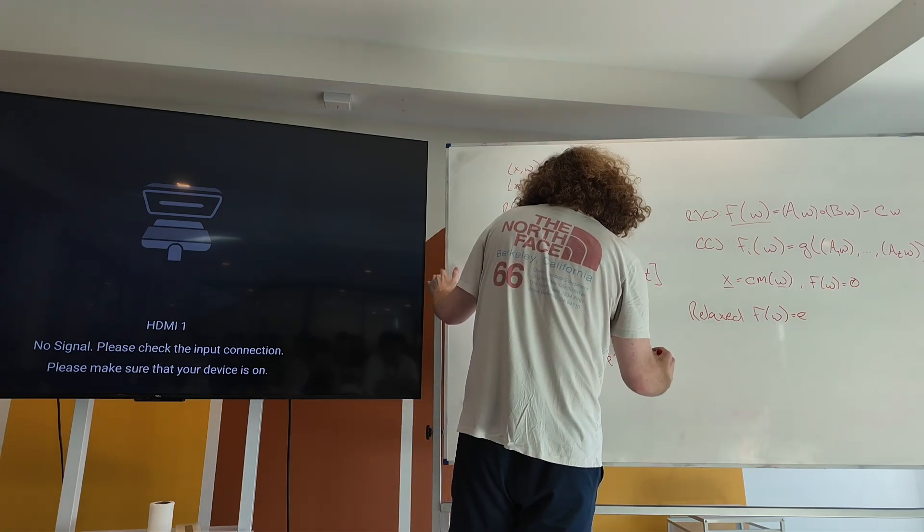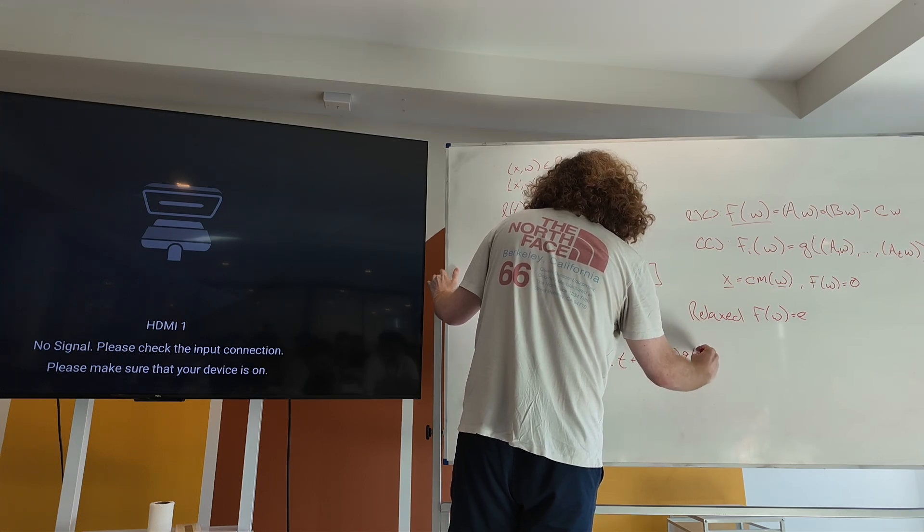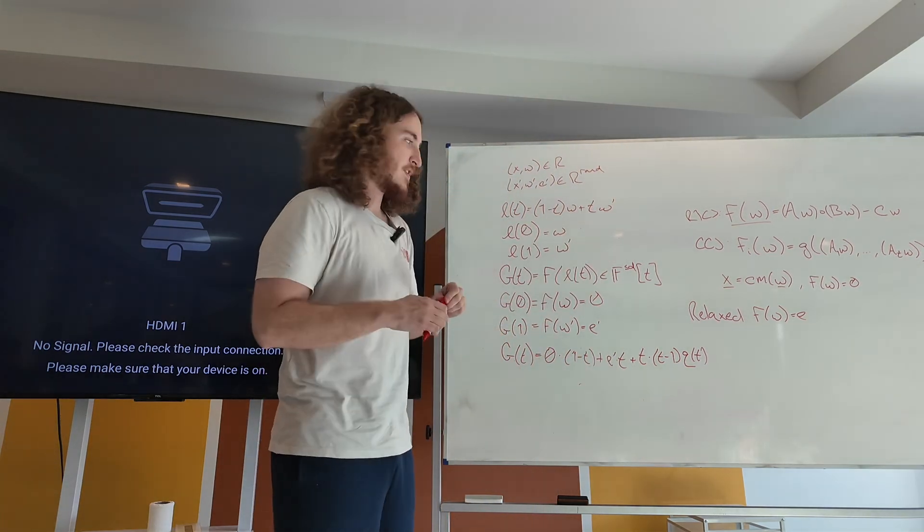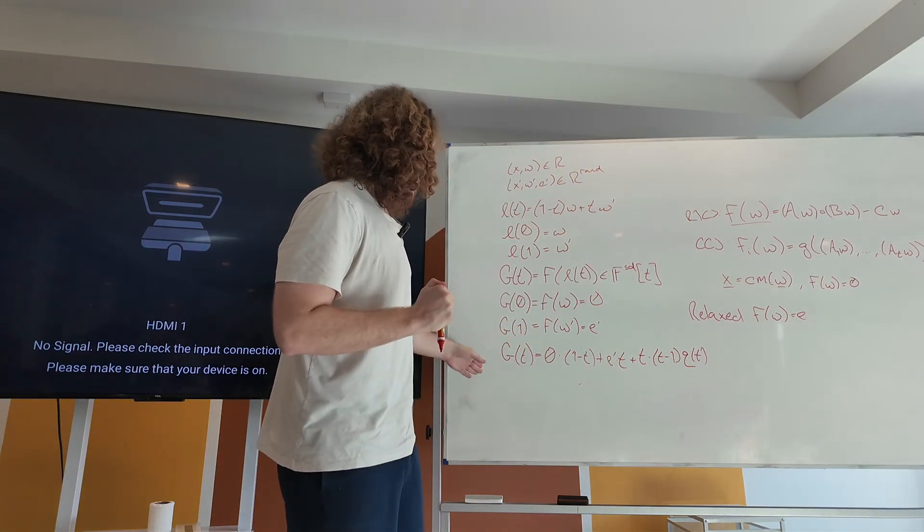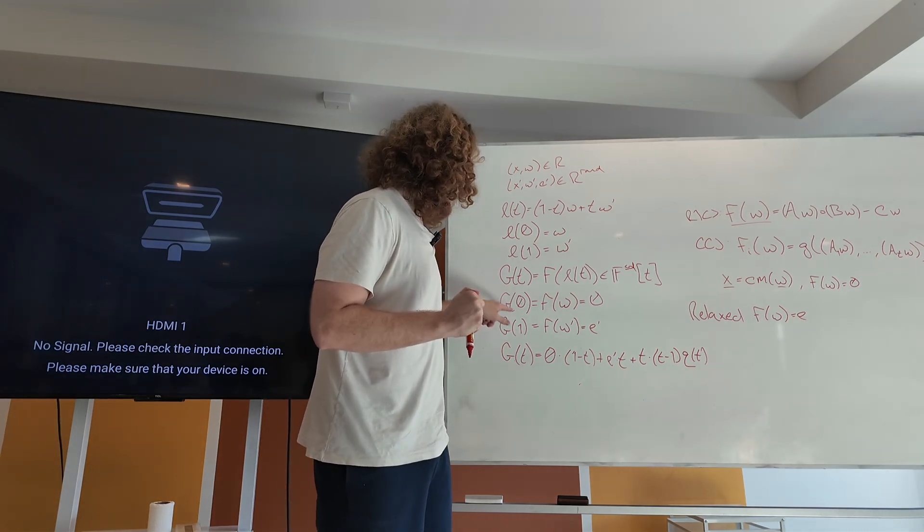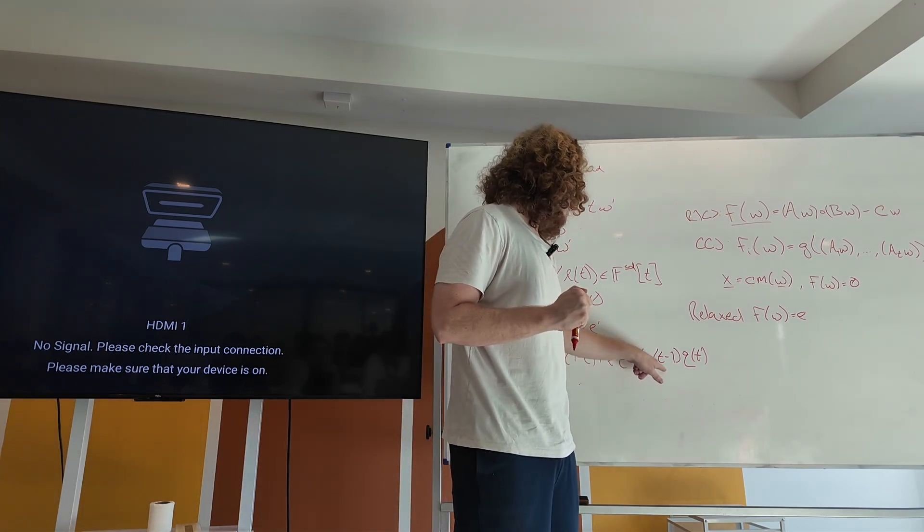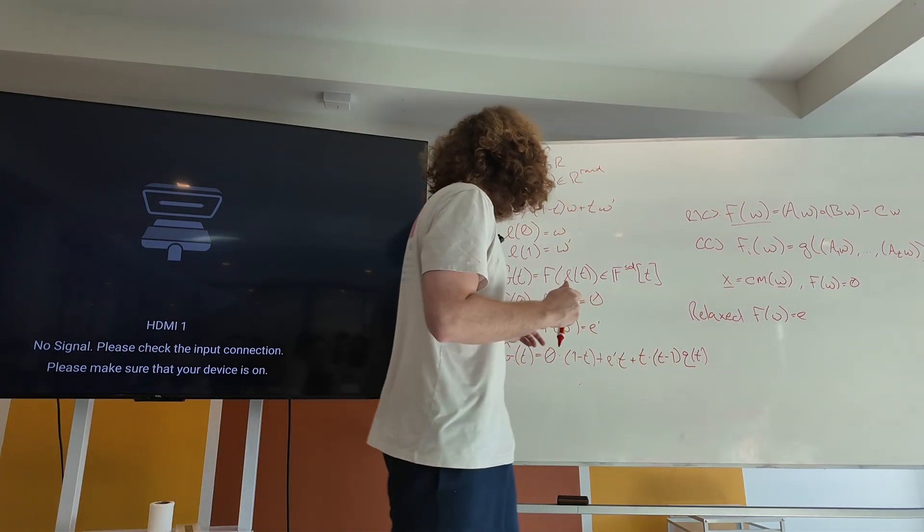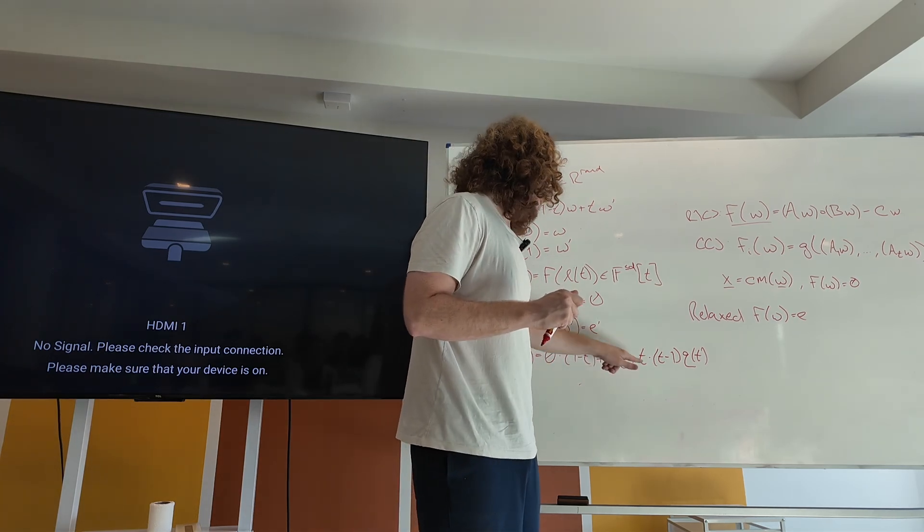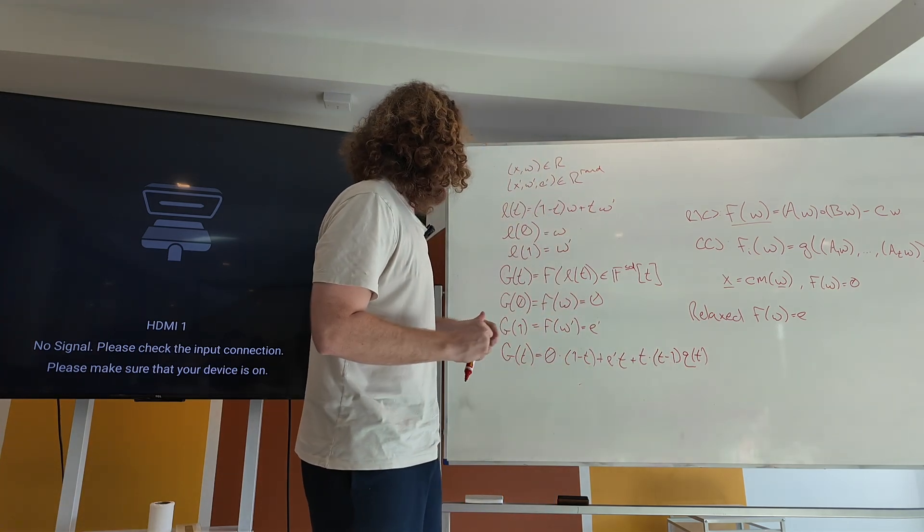So it interpolates between w and w prime. Now we can define the polynomial capital G of t equals little f of L of t. So if f is of degree d, L is of degree 1, this is a degree d univariate polynomial in t. Because of this, we get that g of 0 is equal to f of w, which should be 0.